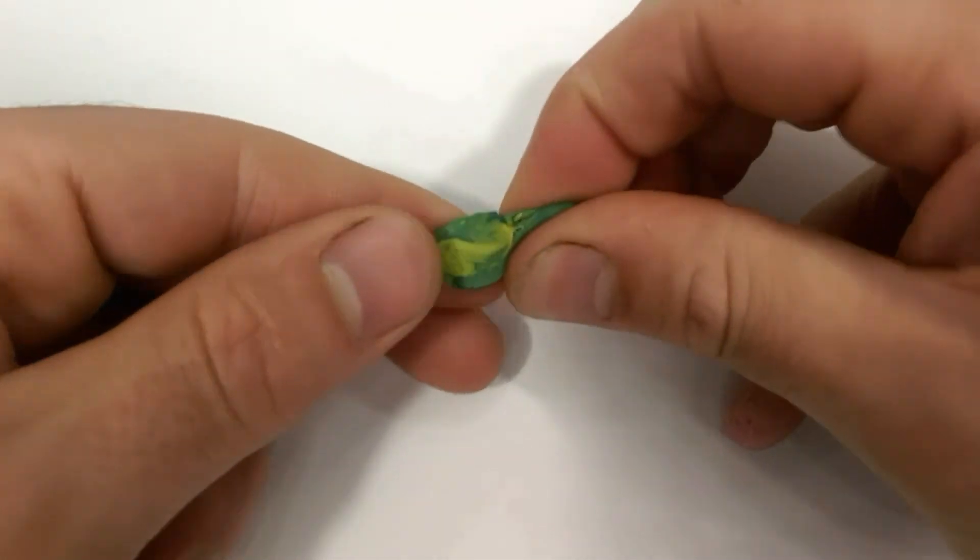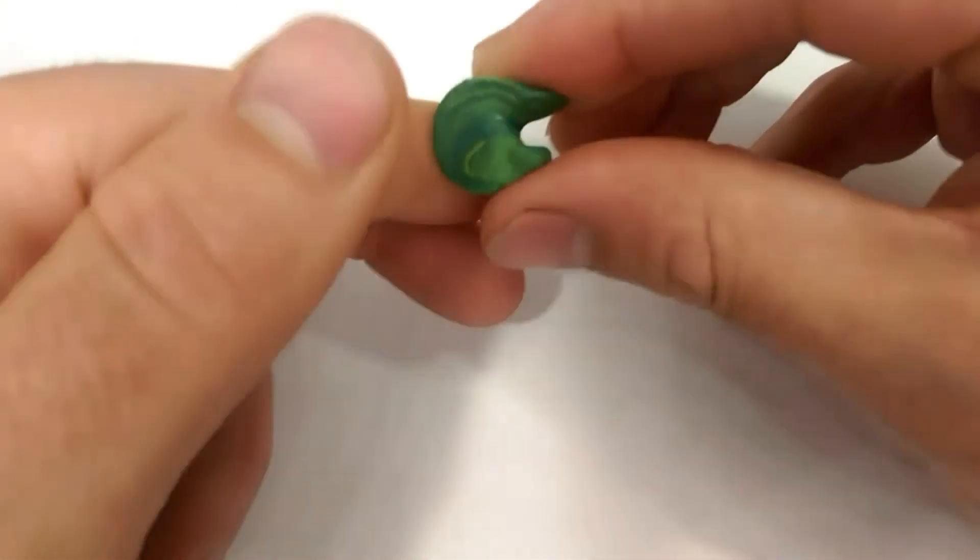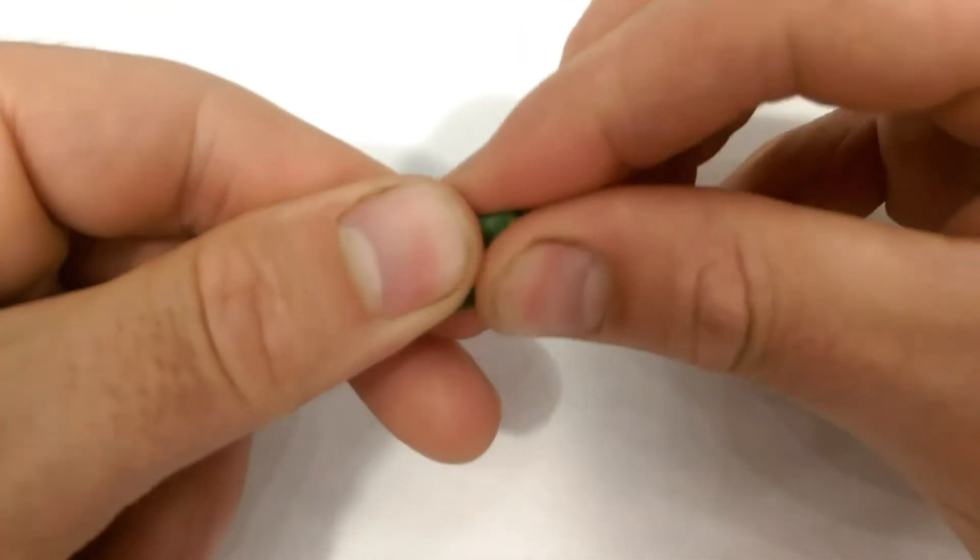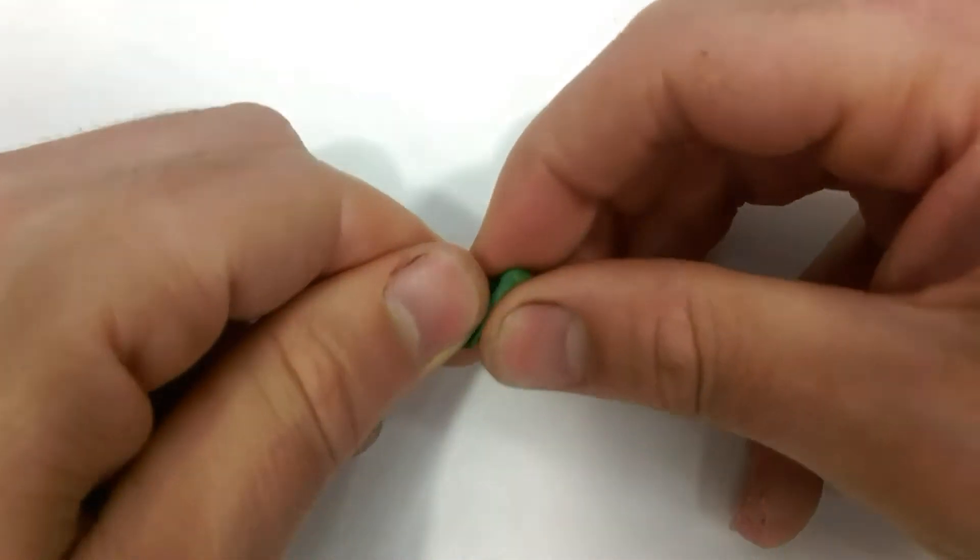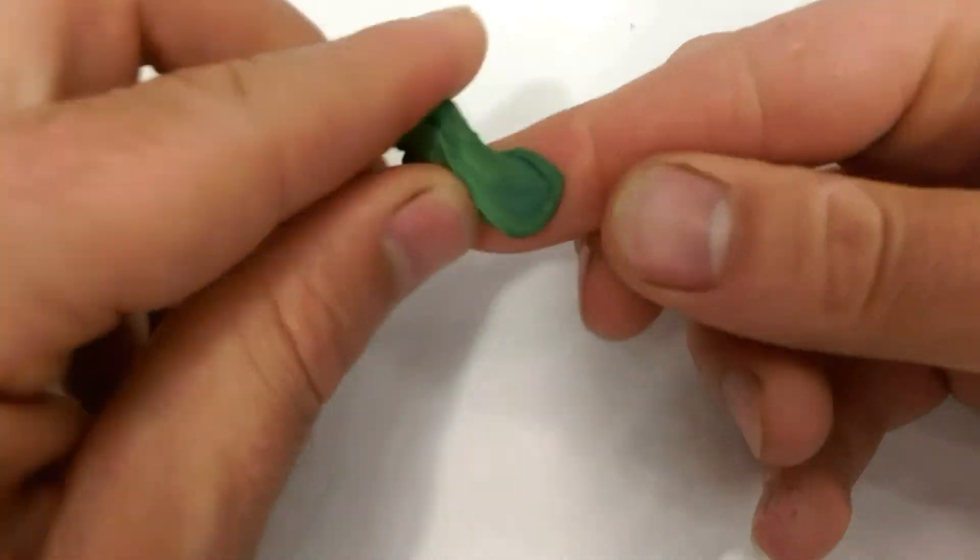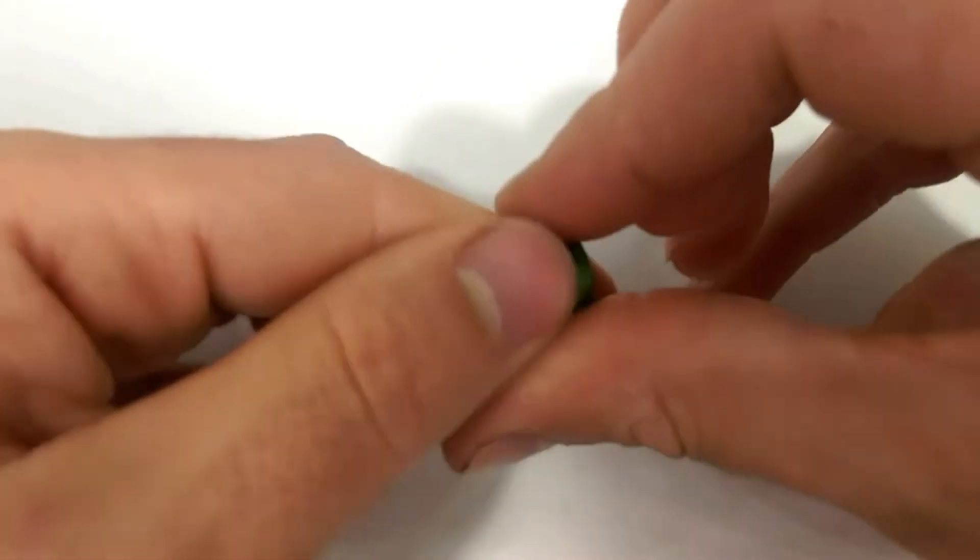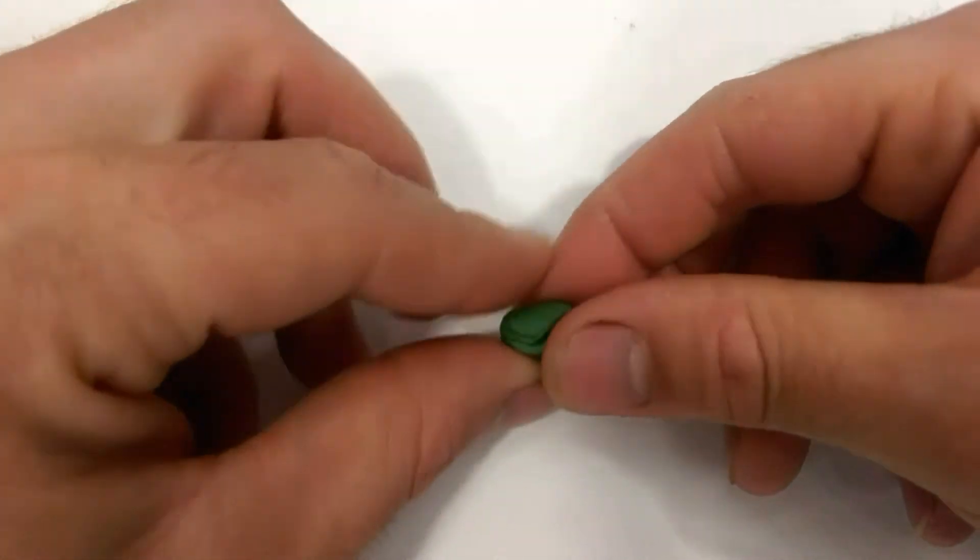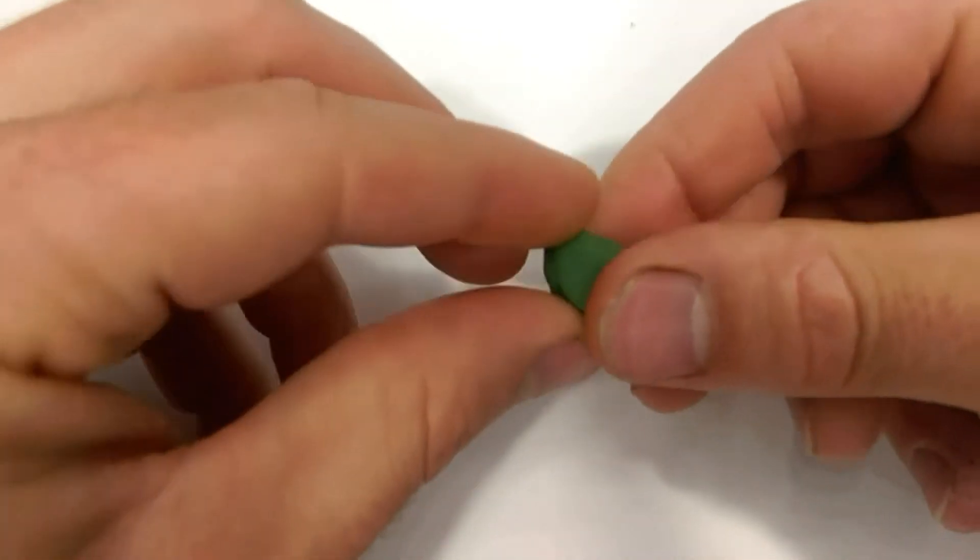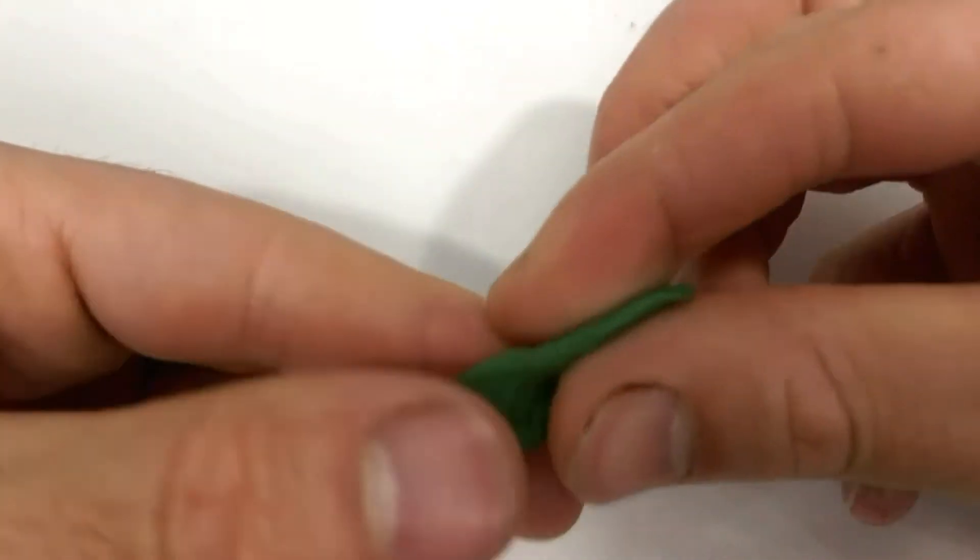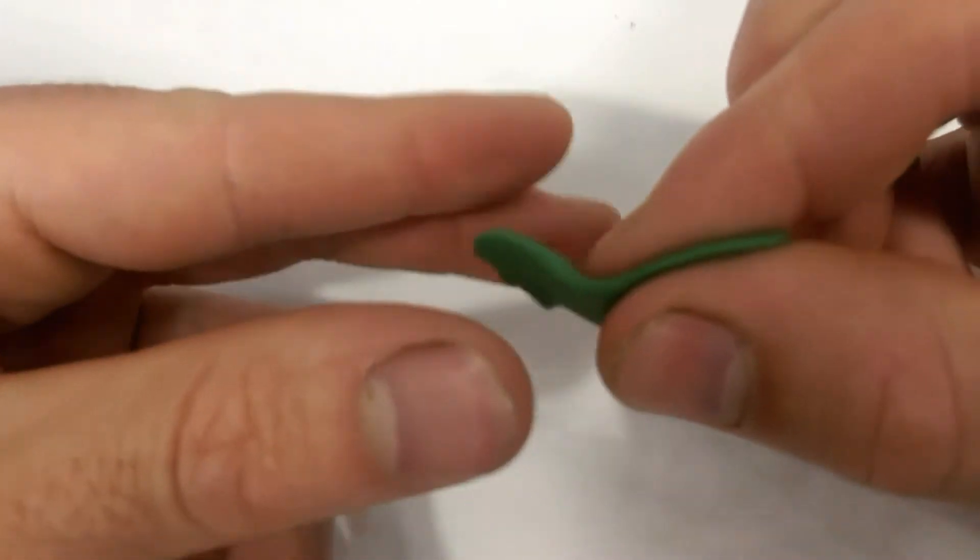What I do then is I squeeze the two bits together. What I tend to do is squeeze, twist, squeeze, twist. It's not particularly hard, but I tend to find that it's the best way to get a good mix. You can hear how sticky that's starting to get.